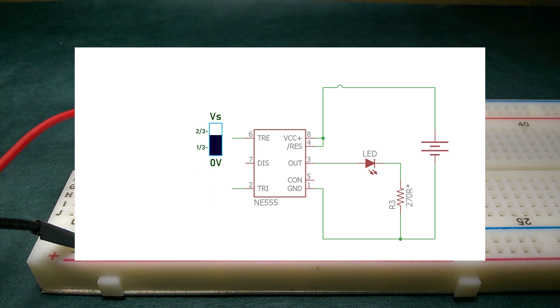And whenever pin 6 detects a voltage more than two-thirds of the supply voltage, it turns off the output. That's the reason why this pin is named as threshold. It sets the maximum voltage limit at pin 6 up to which the output stays on.